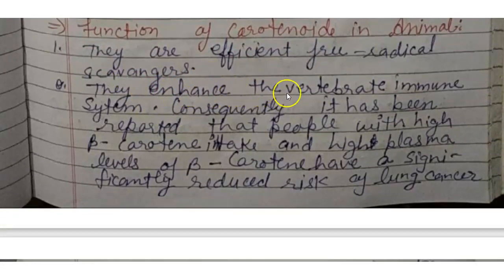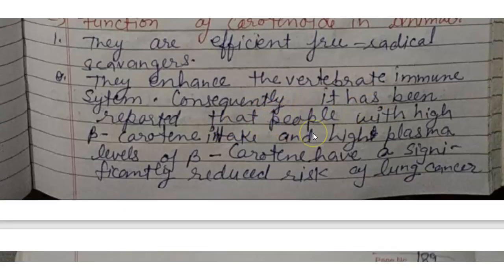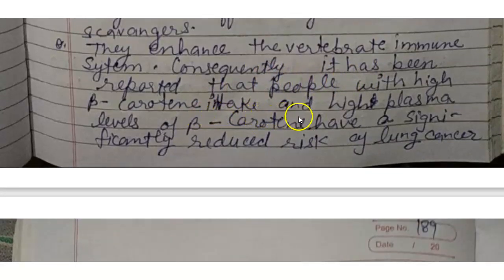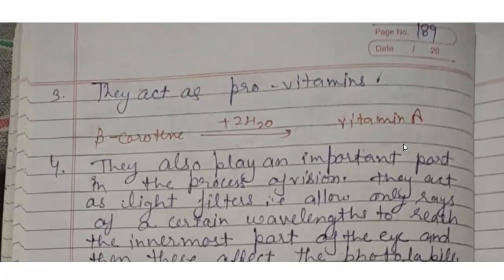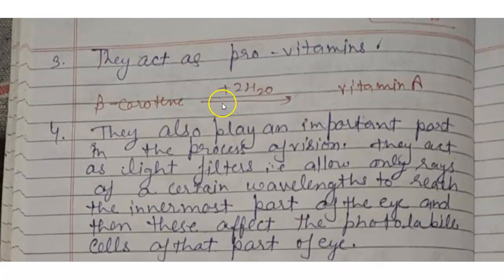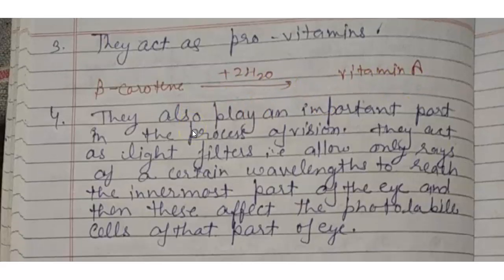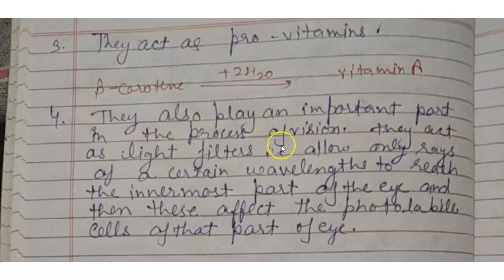Carotenoids enhance the vertebrate immune system. It has been reported that people with high beta-carotene intake and high plasma levels of beta-carotene have a significantly reduced risk of lung cancer. They act as pro-vitamins — beta-carotene plus water forms vitamin A. They also play an important role in the process of vision, acting as light filters that allow only rays of the appropriate wavelength to reach the innermost part of the eye, affecting the photolabile cells of that region.